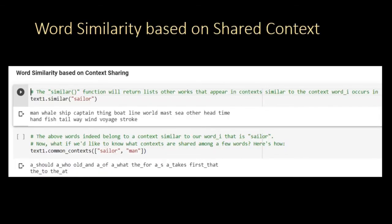The concordance-based word similarity method is one of many lexical similarity methods. It's a very intuitive one. You can actually extract words that share the same context with our target word. To do that, you need to use the similar method within the NLTK text object. You can see that man, whale, ship, captain are all closely tied to the word sailor. It basically returns the words that occur in the context of the word sailor.